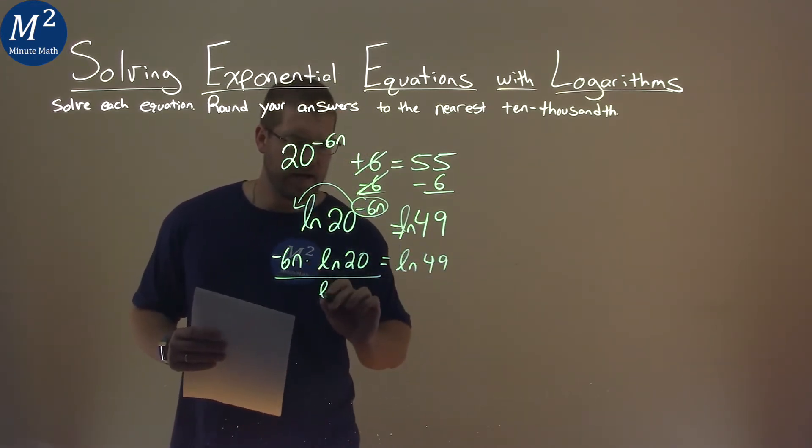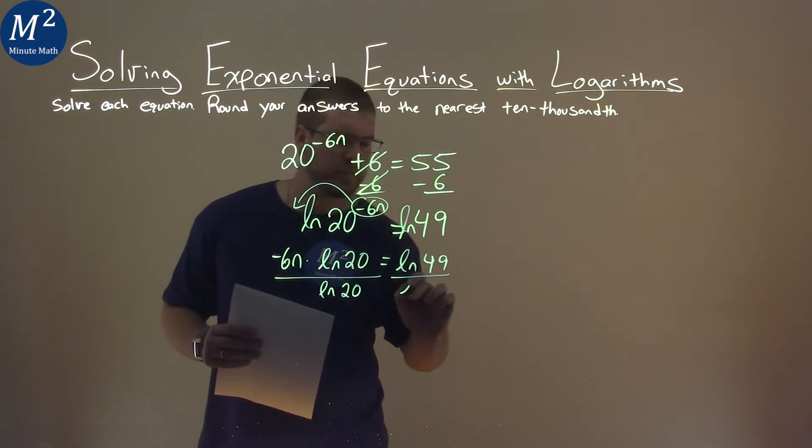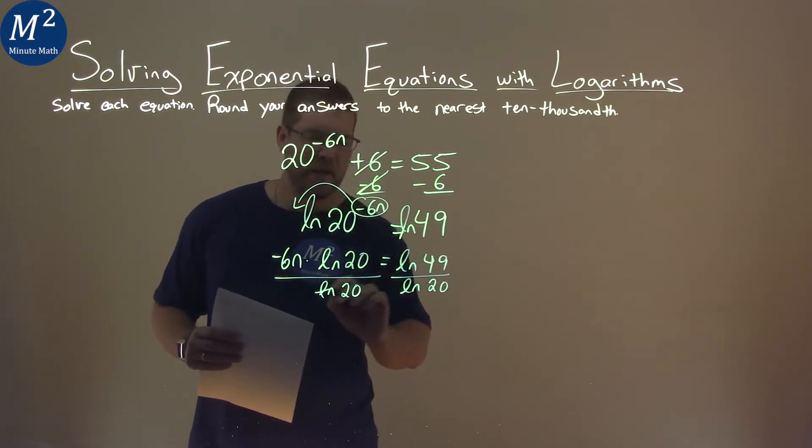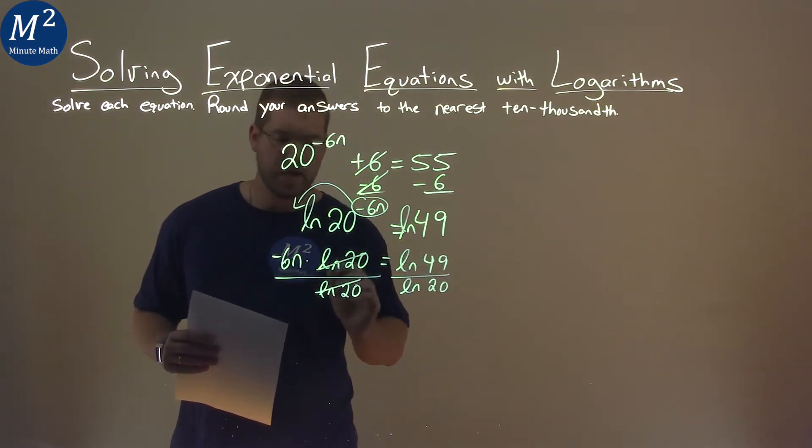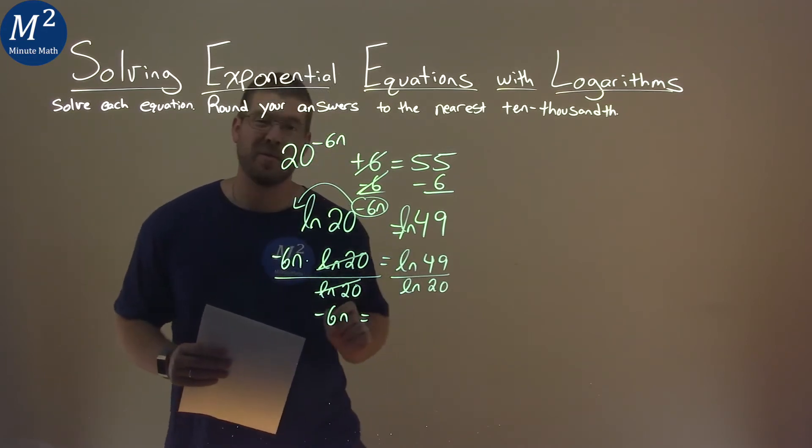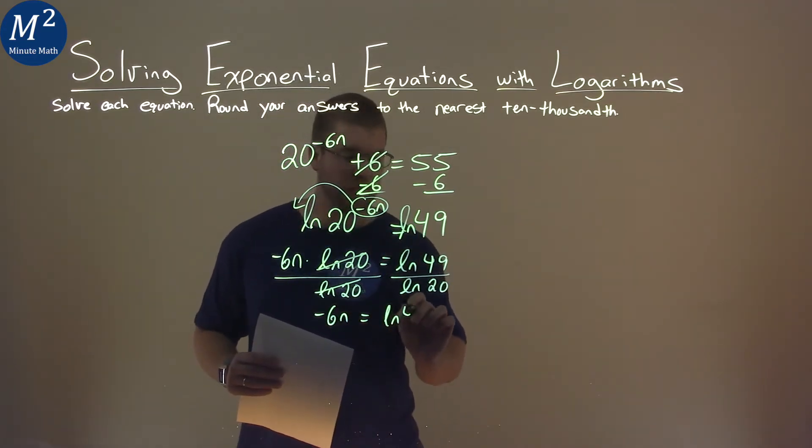I divide both sides by natural log of 20 here, and that cancels right there. I have negative 6n now on the left, and on the right I have natural log of 49 over natural log of 20.